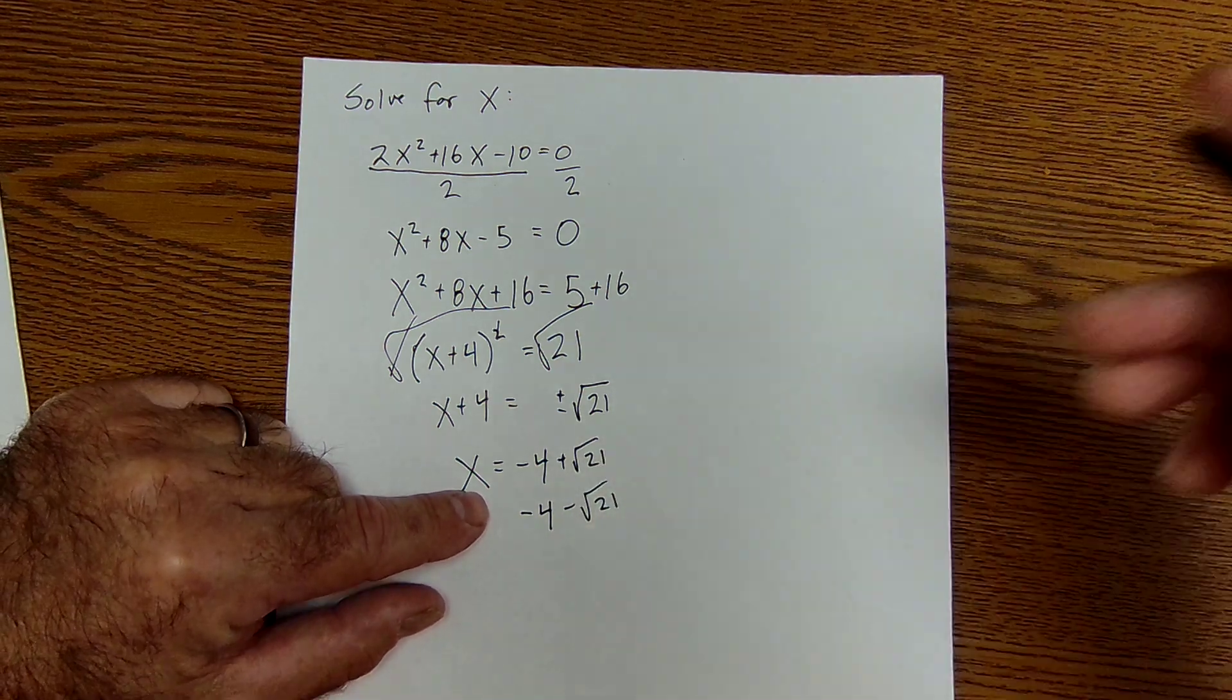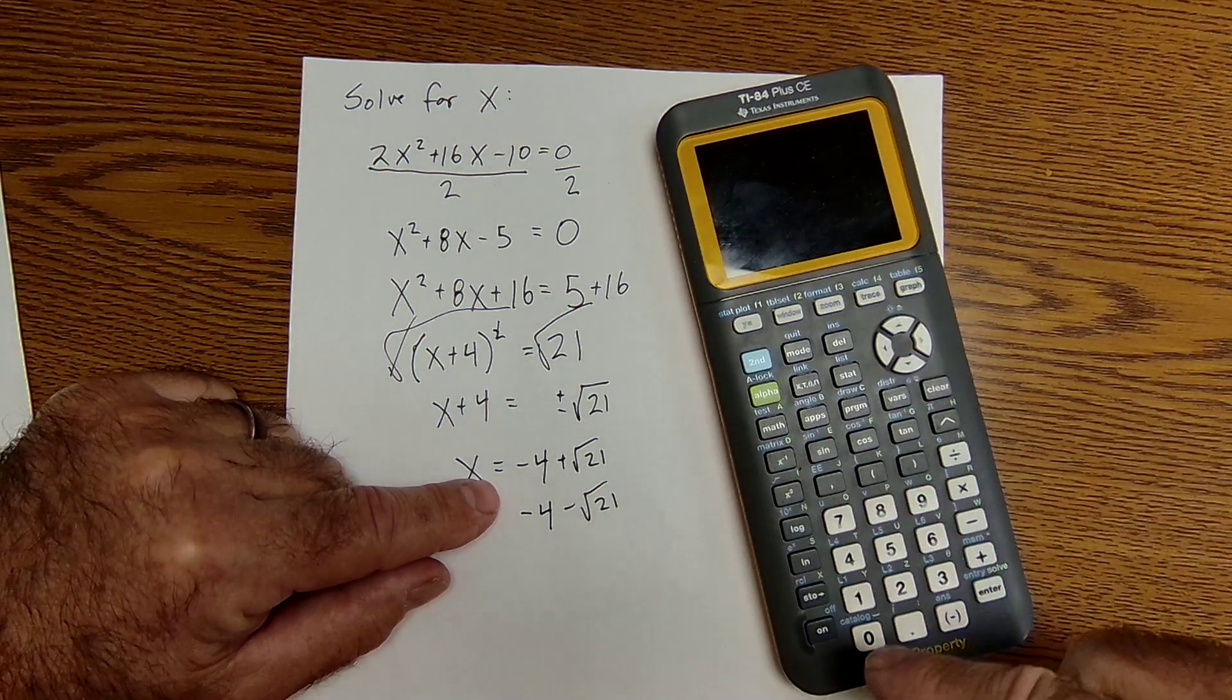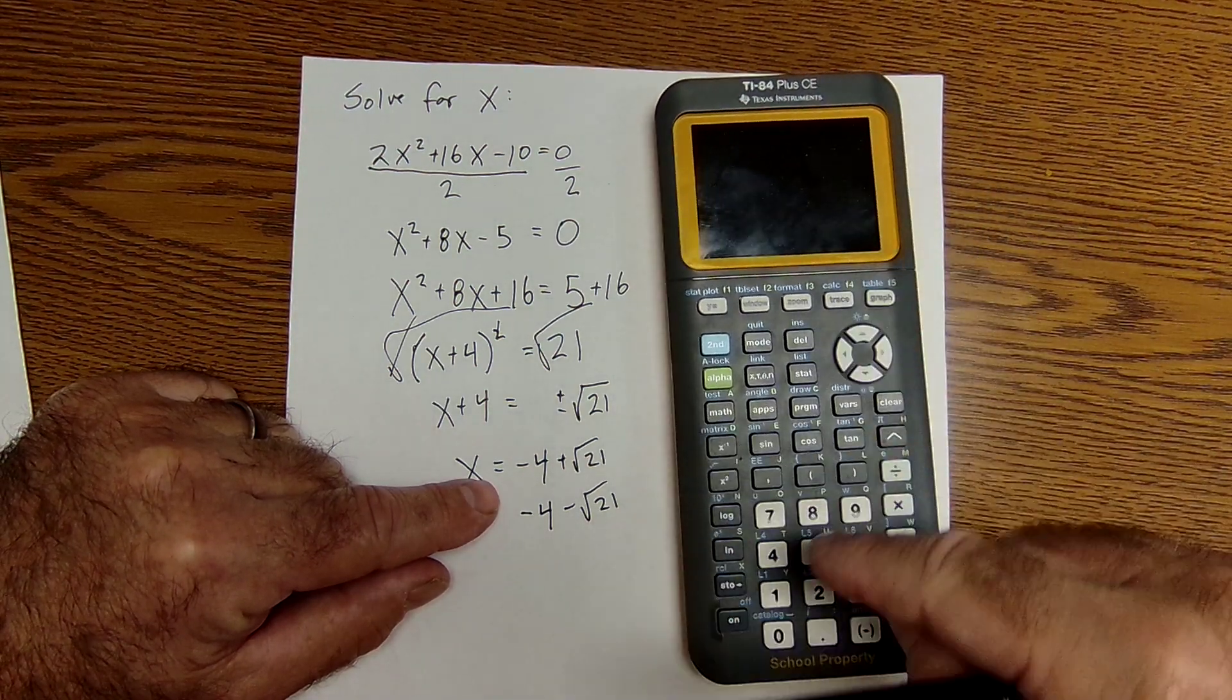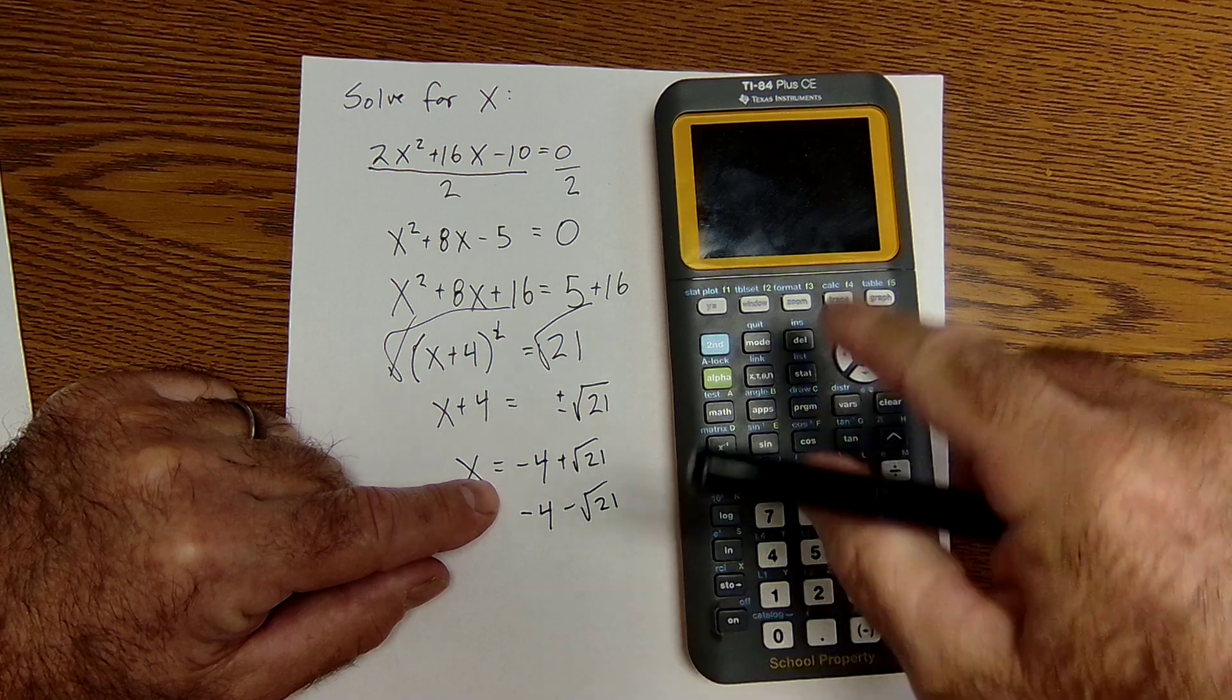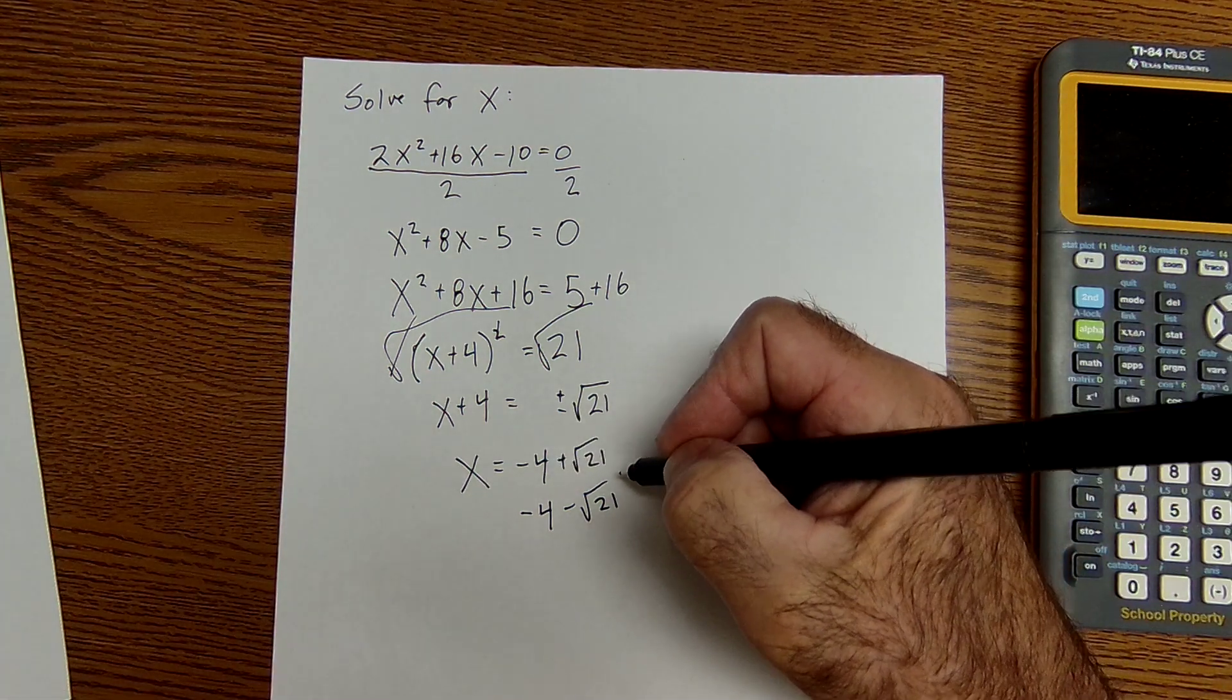These are exact values. You could find the decimal approximation using your graphing calculator. If it had batteries, then you would just enter these values in your calculator and get the decimal approximation.